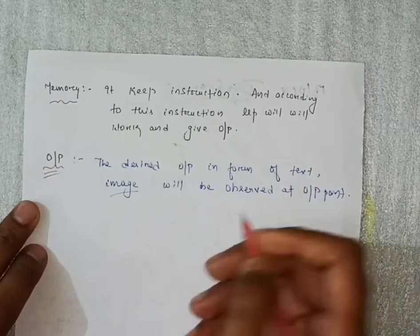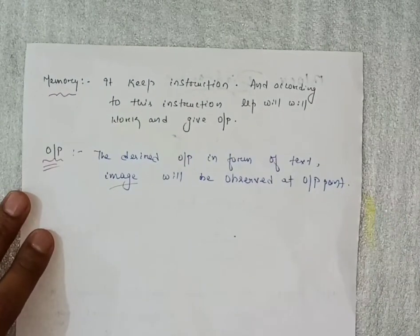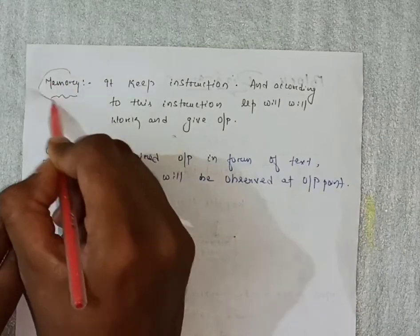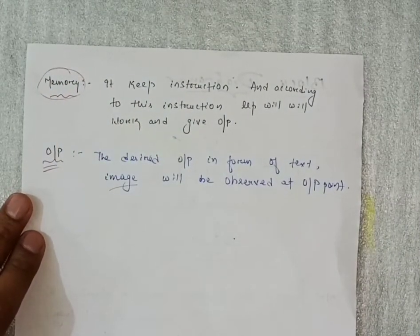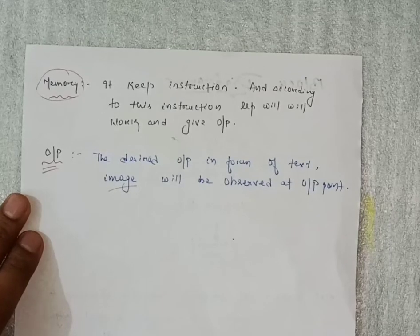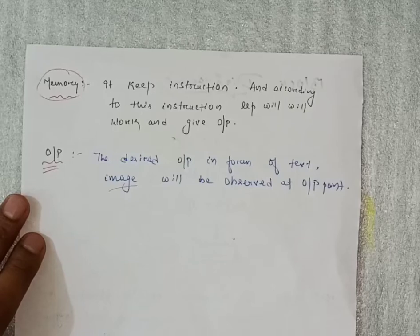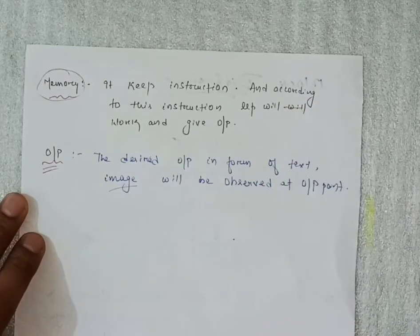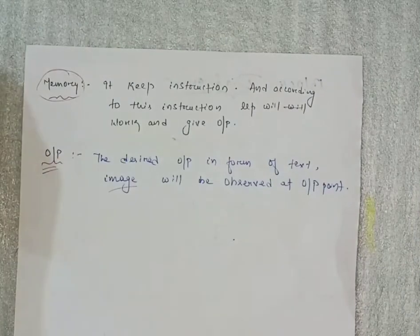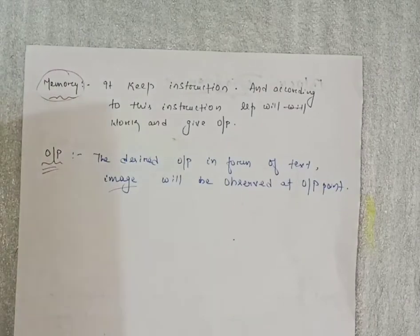Whatever input we have given, just like that we will observe the output. And the memory section - as I just told, memory section will also be there. What will memory section do? It keeps instructions and according to these instructions, microprocessor will work and give output. It will take instructions and accordingly give the output. That's all about microprocessor.